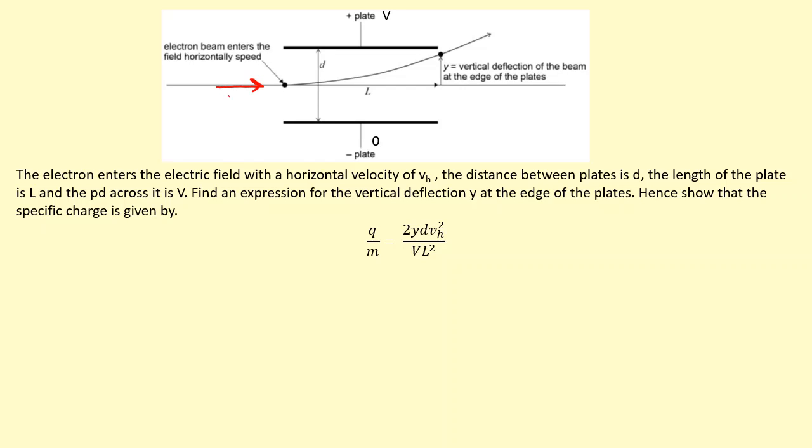Call that vh. We also know it's going to accelerate upwards while horizontally its speed isn't going to change. Using this we can figure out the specific charge. If you noticed before, it's only accelerating vertically, so it's actually similar to a projectile question. So vertically it's going to accelerate constantly, so we can use SUVAT vertically.